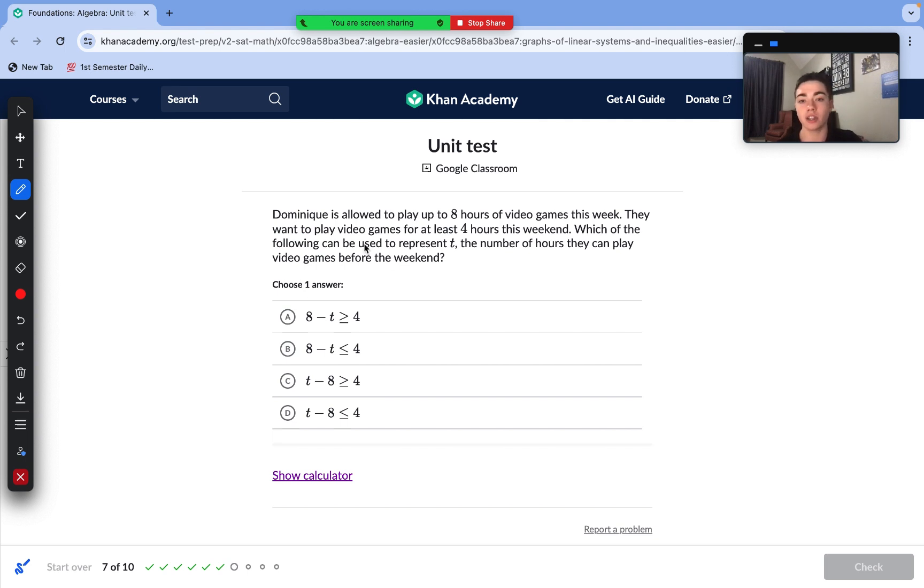Moving to our next question here. Dominic is allowed to play up to eight hours of video games this week. They want to play video games for at least four hours this weekend. Which of the following can be used to represent t, the number of hours they can play video games before the weekend? We need to have greater than or equal to four hours left over. So that automatically eliminates answer choice B and answer choice D. We need that greater than or equal to inequality sign. Now we can see here, if we solve this inequality, we get t is greater than or equal to 12 by adding eight to both sides. Obviously, our t value cannot even be greater than eight, because we can't go above eight. So that automatically eliminates C. And then if we were to solve for t in this equation, it would look like t is less than or equal to four, which makes sense. Our number of hours played before the weekend needs to be less than or equal to four in order for our video games on the weekends to be greater than or equal to four. So answer choice A is correct.